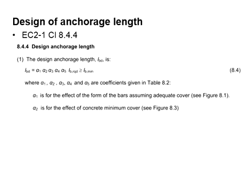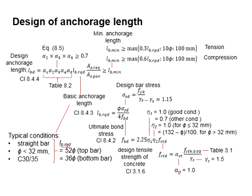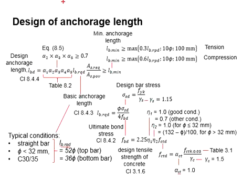Eurocode 2 provides guidance on the design of anchorage length in clause 8.4.4. The equation is given in equation 8.4. This diagram shows the relevant equations used to work out the design anchorage length. There will be a series of factors given in table 8.2, and the multiplication of factors alpha2, alpha3, and alpha5 should be at least greater than 0.7.